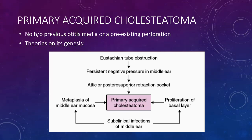The next theory of genesis is proliferation of the basal cell layer. According to this theory, there is proliferation of the basal layer of pars flaccida induced by subclinical childhood infections. The expanding cholesteatoma then breaks through the pars flaccida forming an attic perforation. The next theory is metaplasia of the middle ear mucosa into keratinizing squamous epithelium due to subclinical infections.